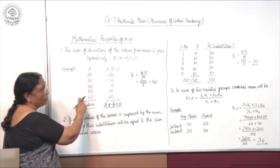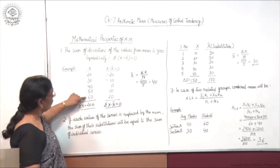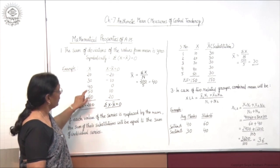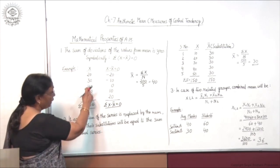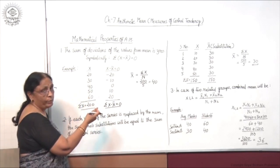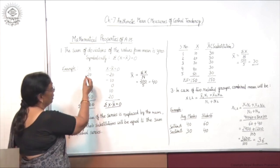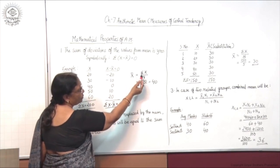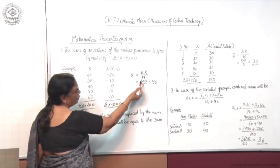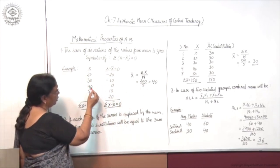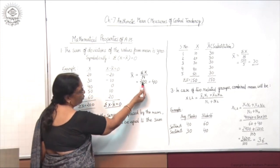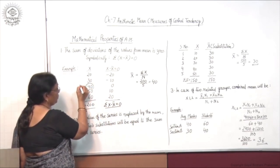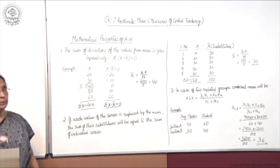Suppose the x column data given is 20, 30, 40, 50, and 60. We need to find x minus x-bar, so first we calculate the actual mean. Sigma x is 200, number of items is 5, so x-bar equals 200 divided by 5, which equals 40. So 40 is the actual mean. Now we take out deviations from 40.